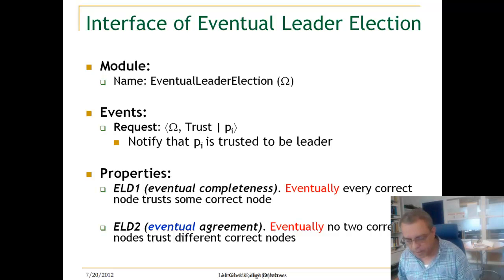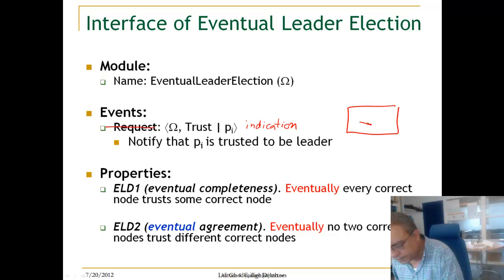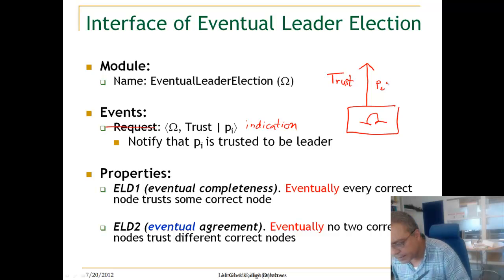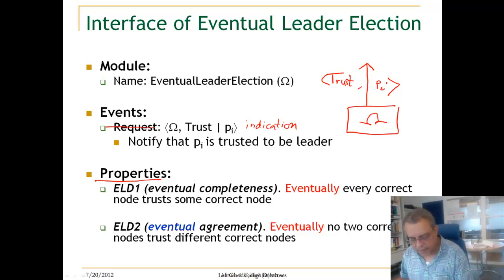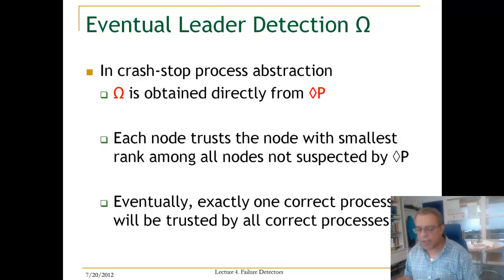Let us look at the algorithm for eventual leader election. Again, we have one indication event — it will just produce one event which is 'trust some process'. The properties are eventual completeness and eventual agreement.